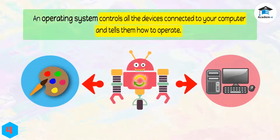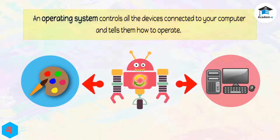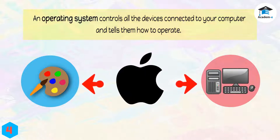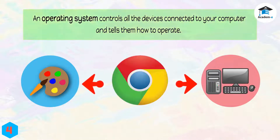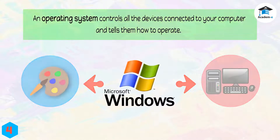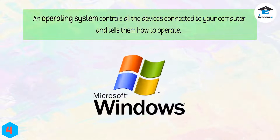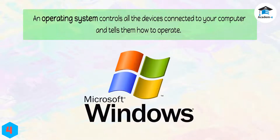It controls all the devices connected to your computer and tells them how to operate. Some examples of operating systems are Apple's Mac OS, Chrome OS, and Microsoft Windows, which is widely used in most computers.